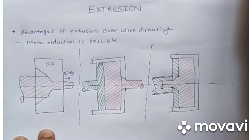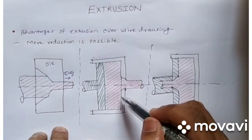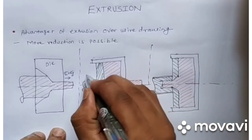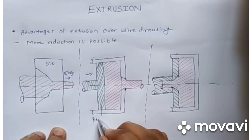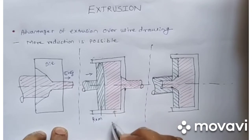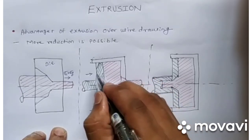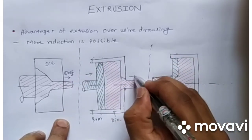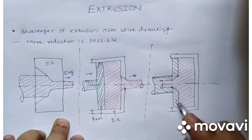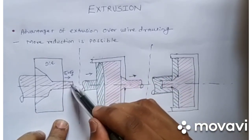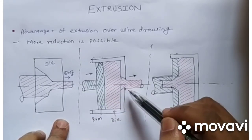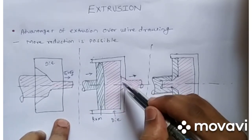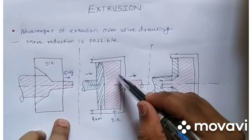So what can we do? In the extrusion process, instead of pulling the material from the front side, we apply a force from the back side with the help of a ram. The die is stationary and the ram moves, pushing the material through the die cavity. The force applied here is a compressive force, whereas in wire drawing the force was tensile.